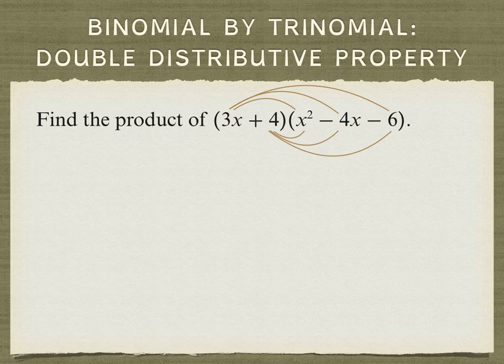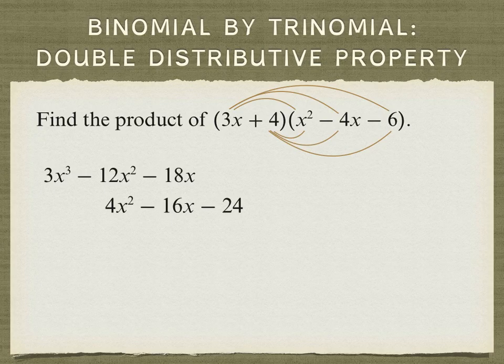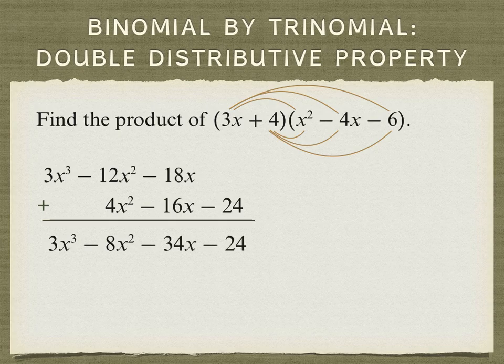Let's write down 3x times the trinomial. And underneath that, lining up like terms, we can multiply the 4 times the three terms of the trinomial. We can add these like terms together, and we get 3x cubed minus 8x squared minus 34x minus 24.